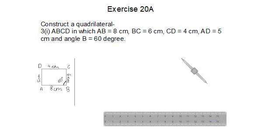This is the first part of the question. It says, construct a quadrilateral ABCD in which AB is equal to 8 cm, BC is 6 cm, CD is 4 cm, AD is 5 cm, and angle B is equal to 60 degrees.